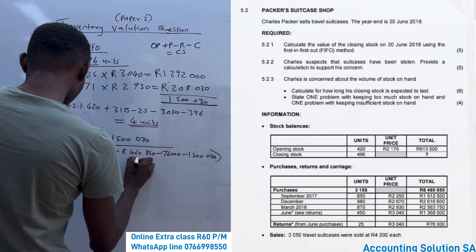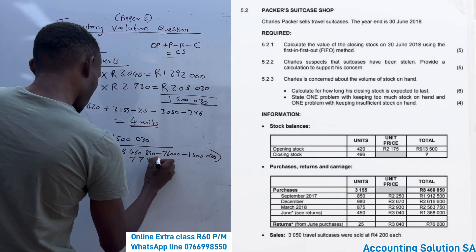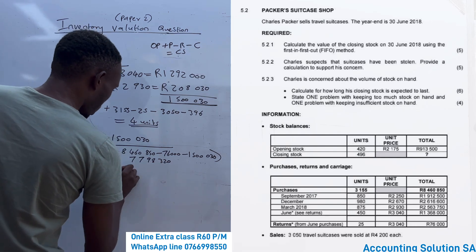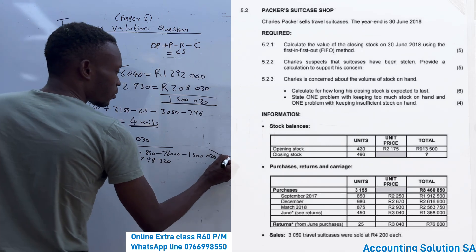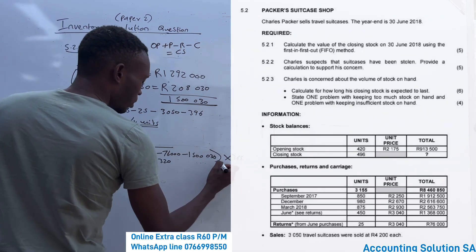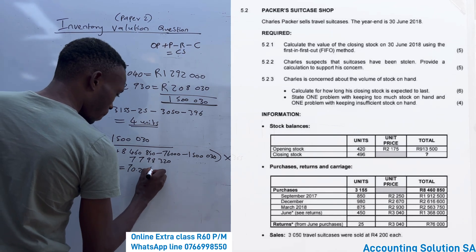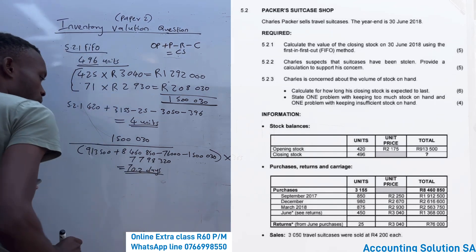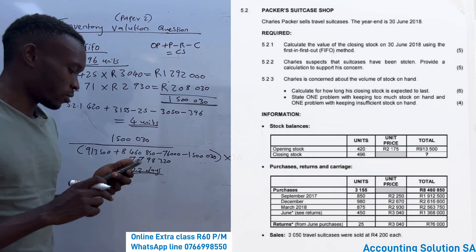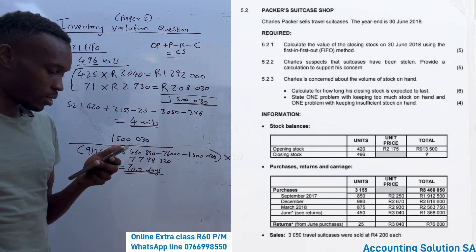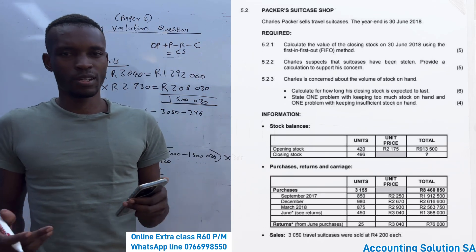This gives a cost of sales of R7,798,320. Then we multiply by 365 days, giving us 70.2 days. It is going to take 70.2 days for Charlie to sell this inventory. A suitcase does not expire — it is not like bread, which would expire.